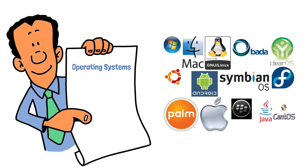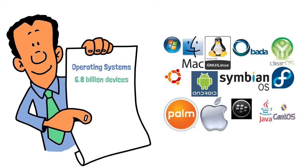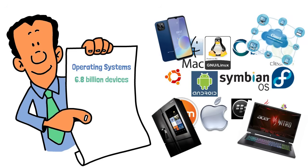Did you know that over 6.8 billion devices around the world rely on an operating system? From your phone and laptop to smart fridges and cloud servers, the OS plays a crucial role in managing everything that happens under the hood.